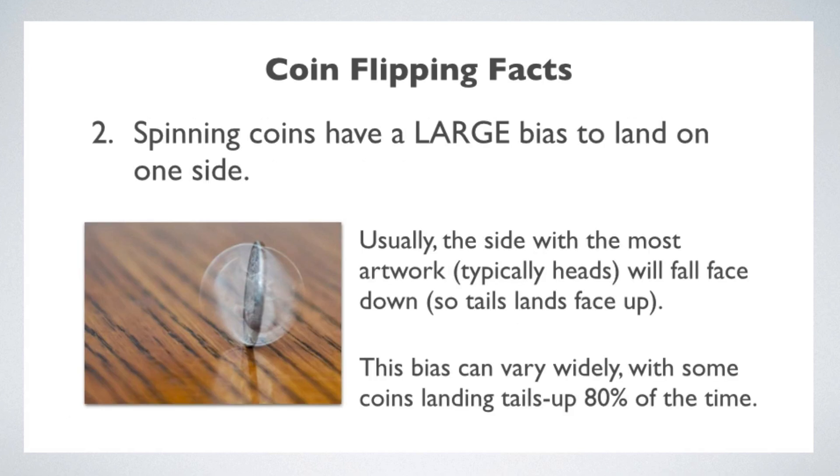Coin flipping fact number two. Spinning coins have a large bias to land on one side or the other. Sometimes people spin a coin thinking that this is a good randomizer, but it's not. It's much less random than flipping a coin. The exact determination of the bias depends in a delicate way on the shape of the coin's edge, and on the exact center of gravity. For a long time, magicians have used coins with slightly shaped edges that always come up heads. For regular coins, the bias tends to range widely from coin to coin, but the tendency is to favor tails up.